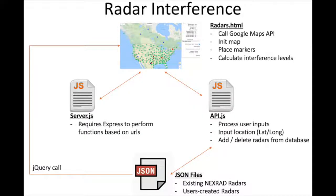The code for the interference app works as such. The server is run in Node and uses Express to direct the client to the HTML page where the correct address is input. It also takes in inputs using the Express GET function to allow the client to add new entries into the database. The bulk of the functions relating to writing into the database is found in API.js, which are called when the server receives a GET request to add new entries to the database from the client.